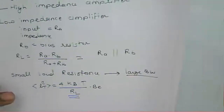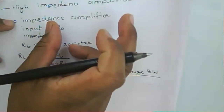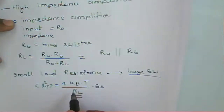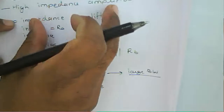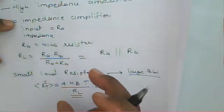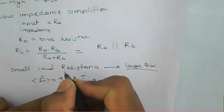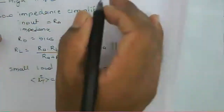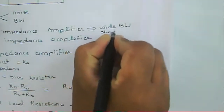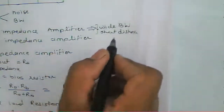The low impedance amplifier has limitations regarding thermal noise — it is not sensitive to small signal voltages. That's why a low impedance amplifier cannot be used for long distance communication. It is used only for short distance applications: wide bandwidth is available, but only for short distances.